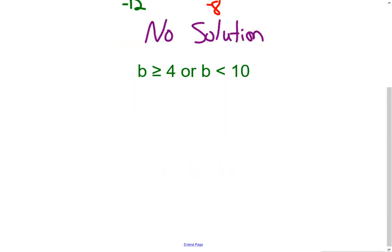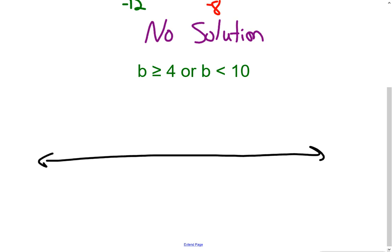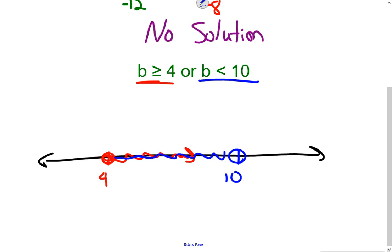Now I have this other scenario. B is greater than or equal to 4, or B is less than 10. Graphing B ≥ 4 going right from 4, and B < 10 going left from 10 — the red continues through, and the entire number line is covered. So every number is a solution. Because this time we have an OR, only one of them has to be true. In this case, we have all real numbers as our solutions.